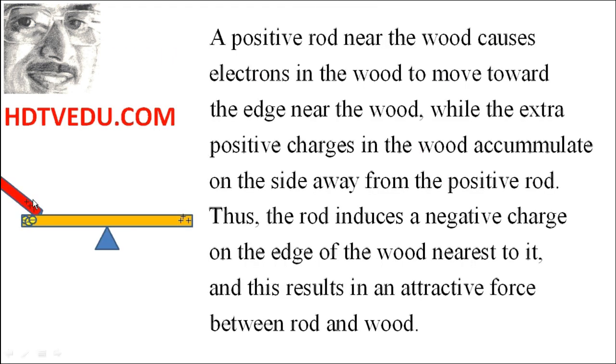A positive rod near the wood causes electrons in the wood to move toward the edge near the wood, while the extra positive charges in the wood accumulate on the side away from the positive rod. Thus the rod induces a negative charge on the edge of the wood nearest to it, and this results in an attractive electrical force between rod and wood, plus and minus attraction.